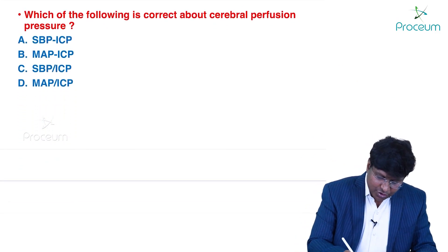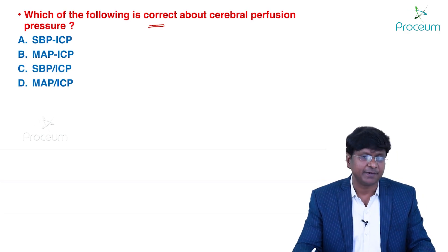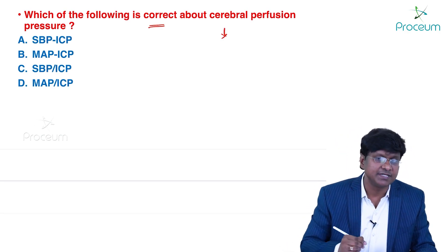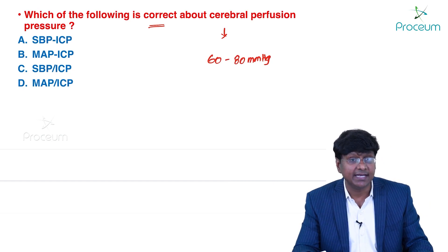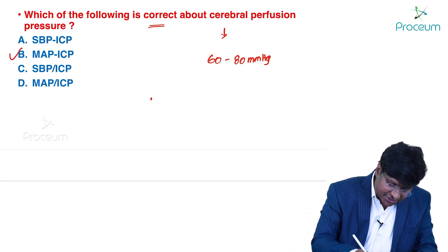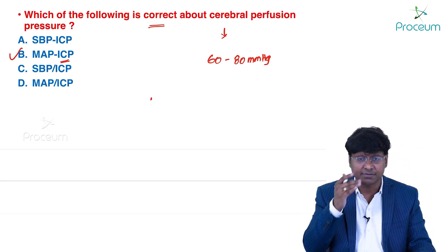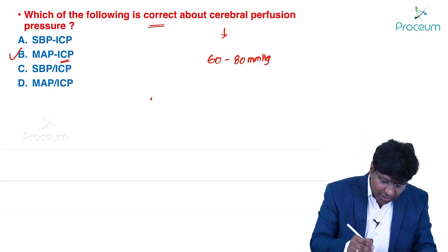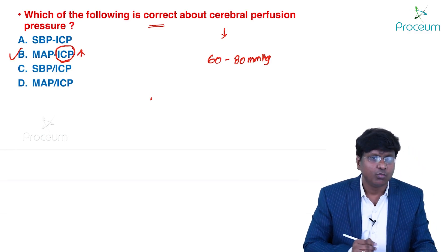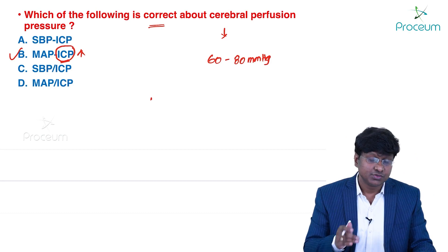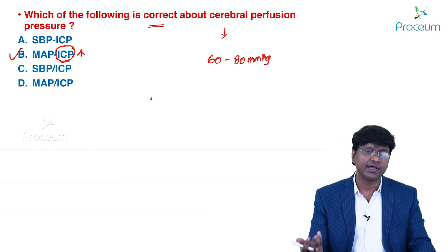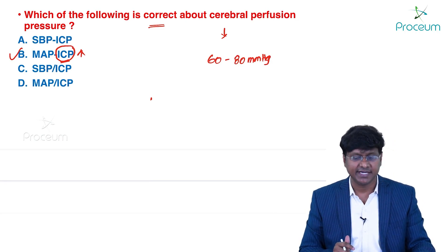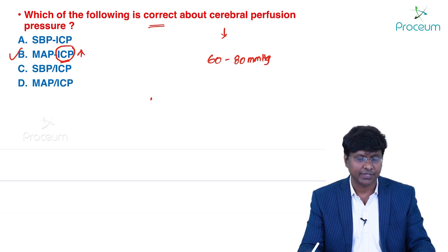Which statement is correct about cerebral perfusion pressure? Normal CPP is 60–80 mmHg. CPP is calculated as mean arterial pressure minus intracranial pressure. If intracranial pressure increases, CPP decreases — which is why raised ICP is dangerous. CPP = MAP − ICP.